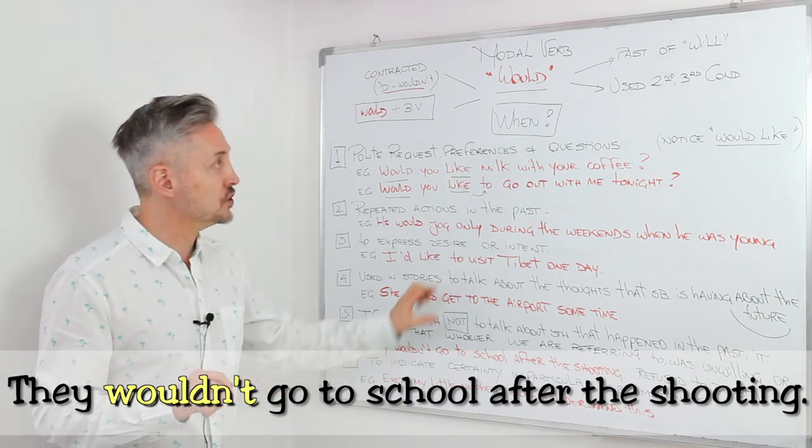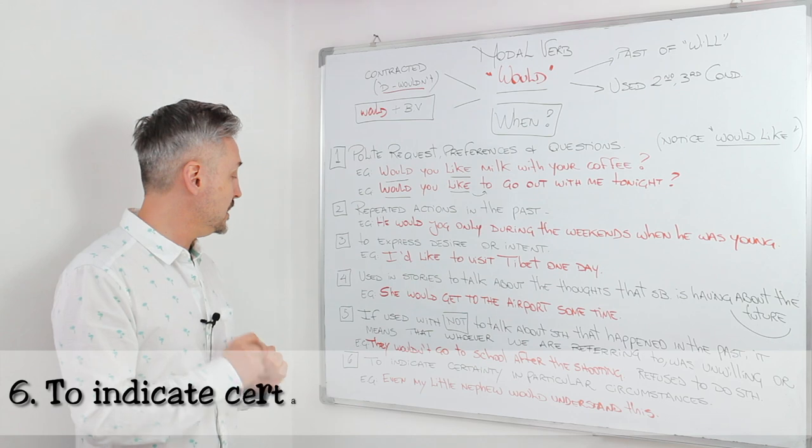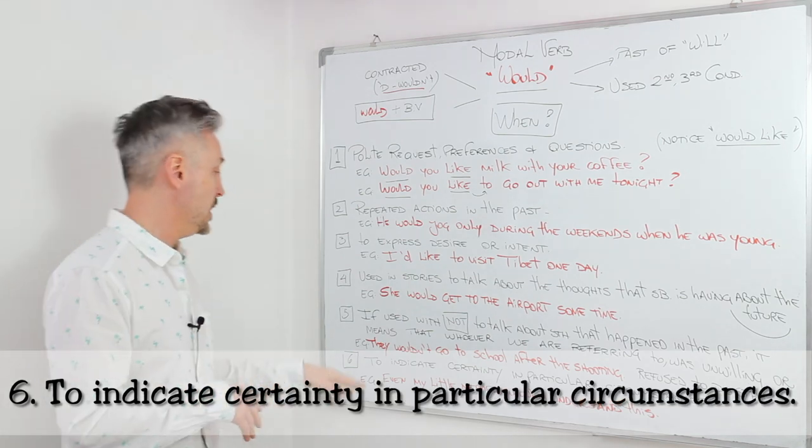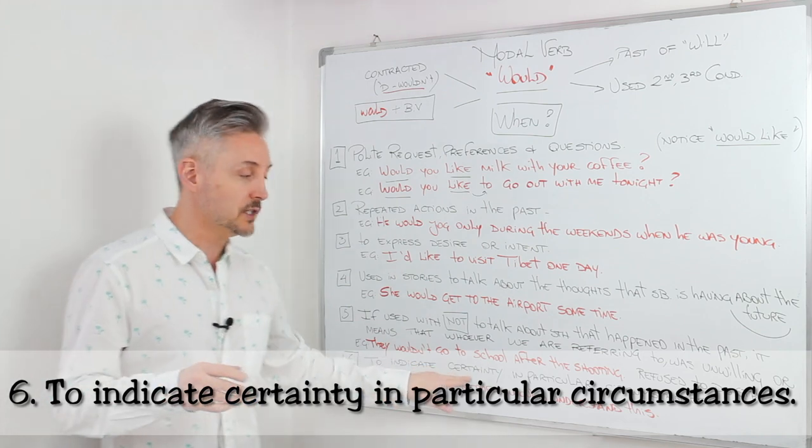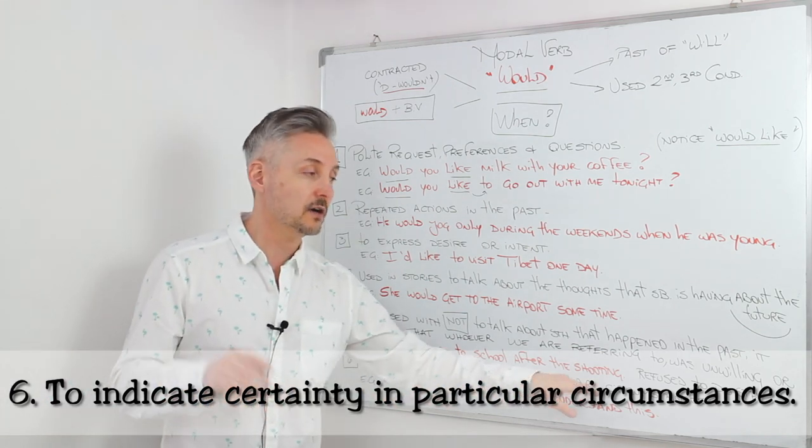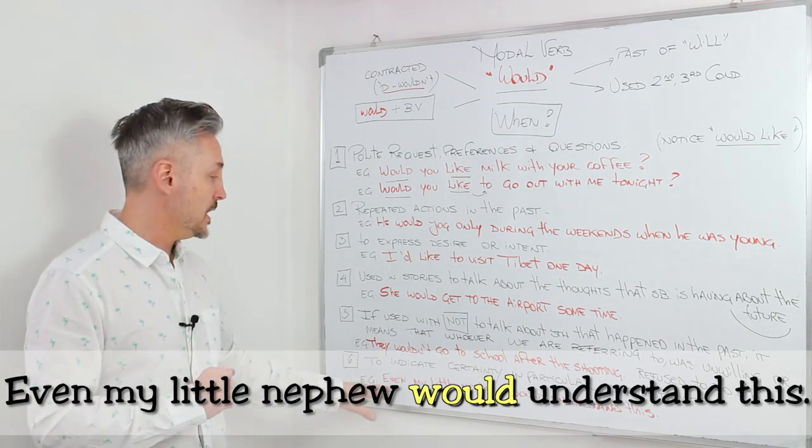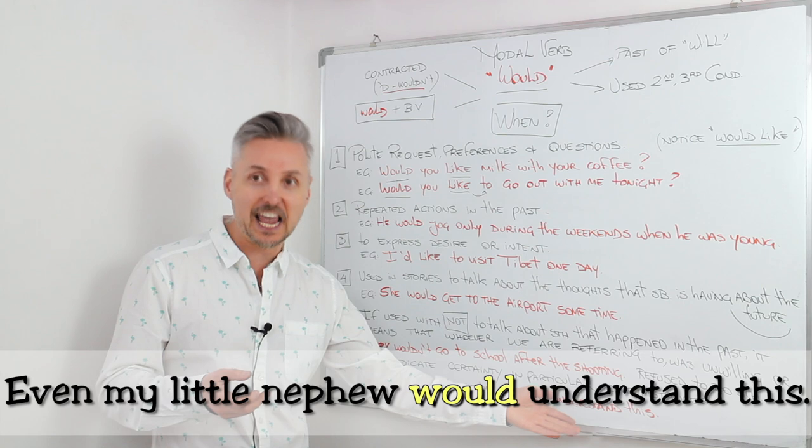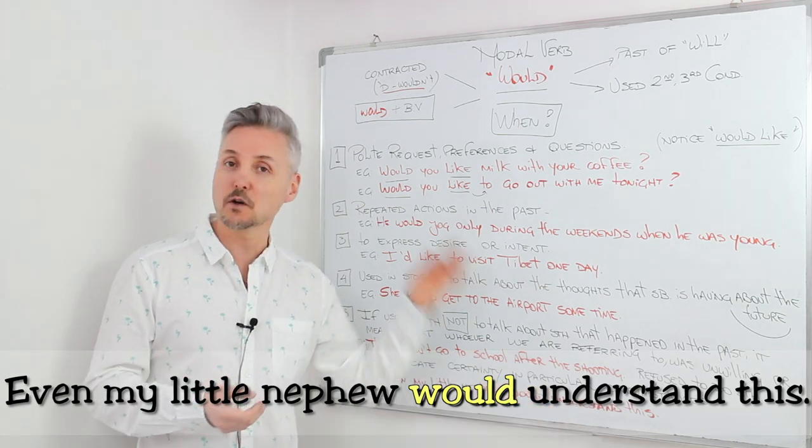This is attached to the second conditional. Let's look at the sixth situation where we find would: to indicate certainty in particular circumstances. For example, even my little nephew would understand this.